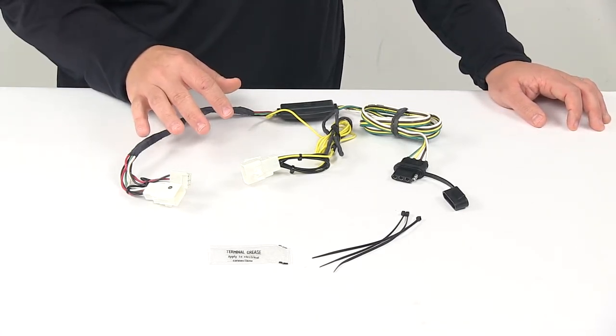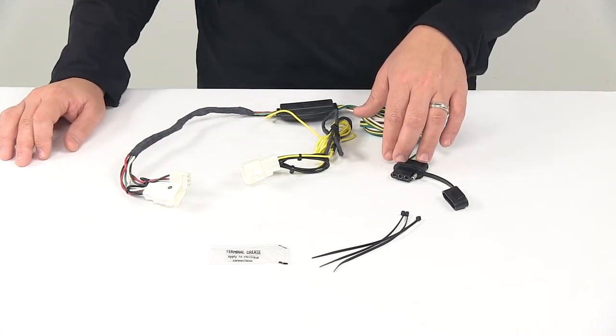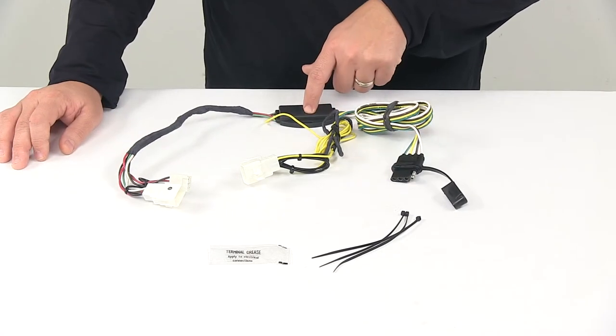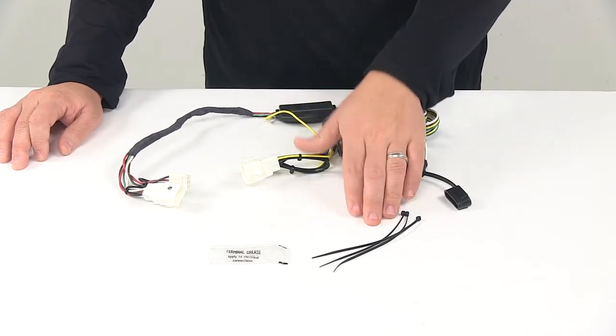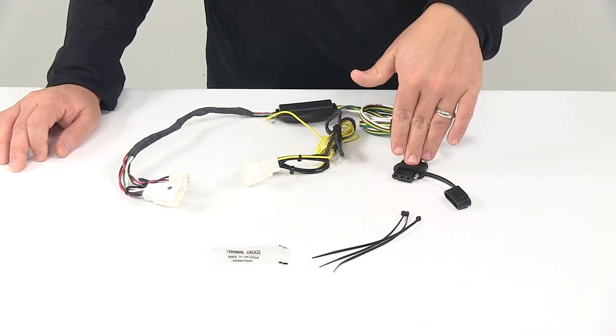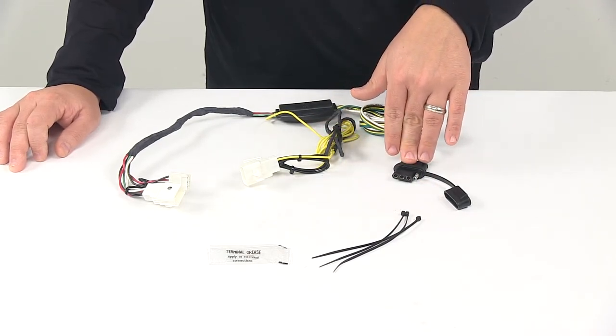Once you have those connected, you'll then need to mount the converter box to a safe out-of-the-way location using the included cable ties, and then route the four-way flat connector beneath the vehicle near the trailer hitch.